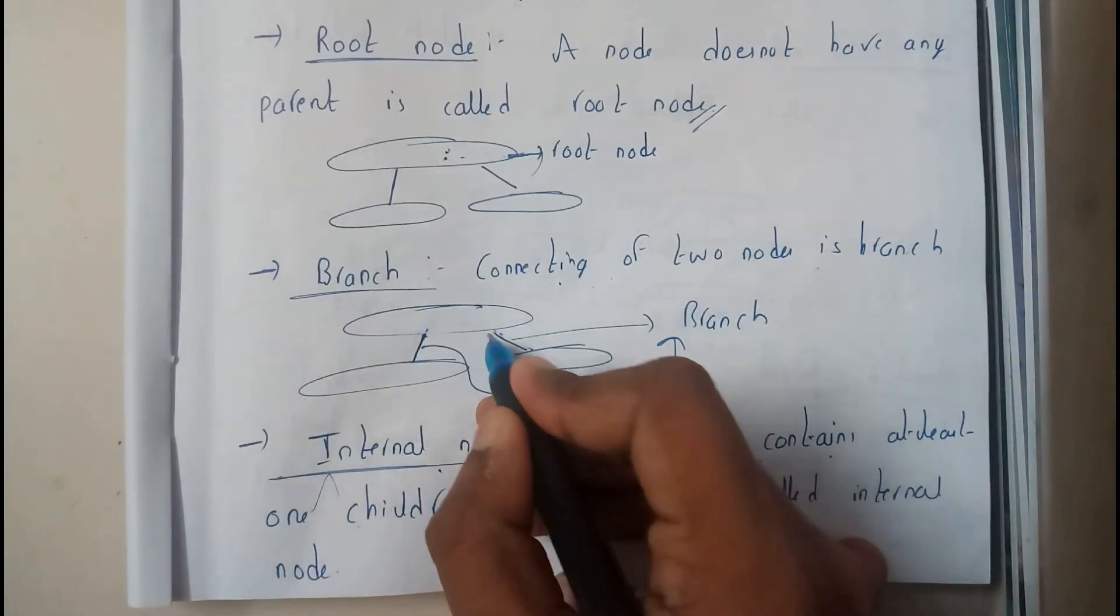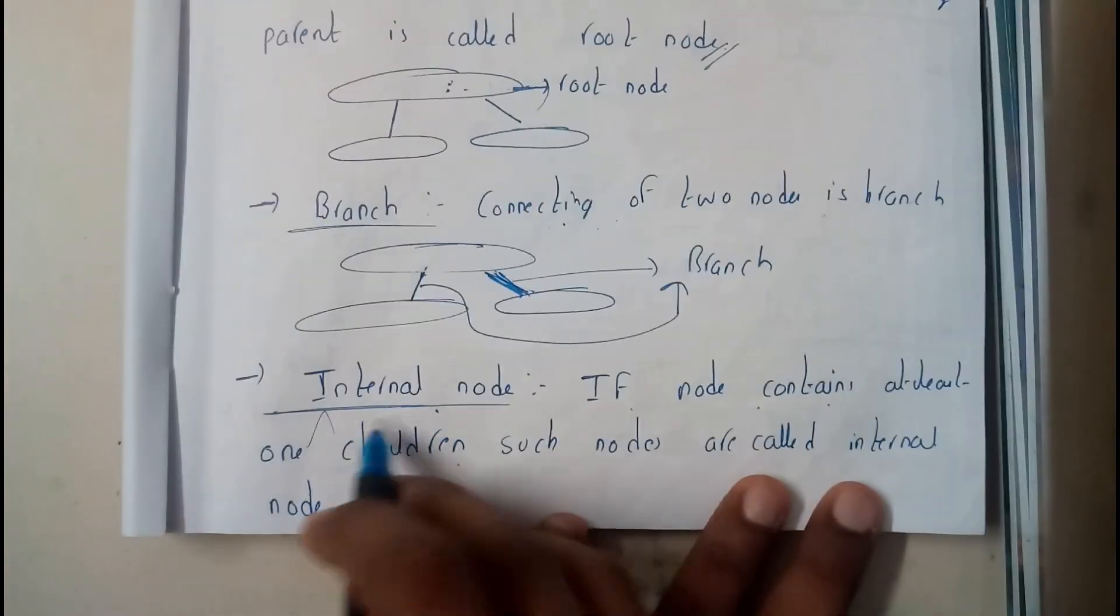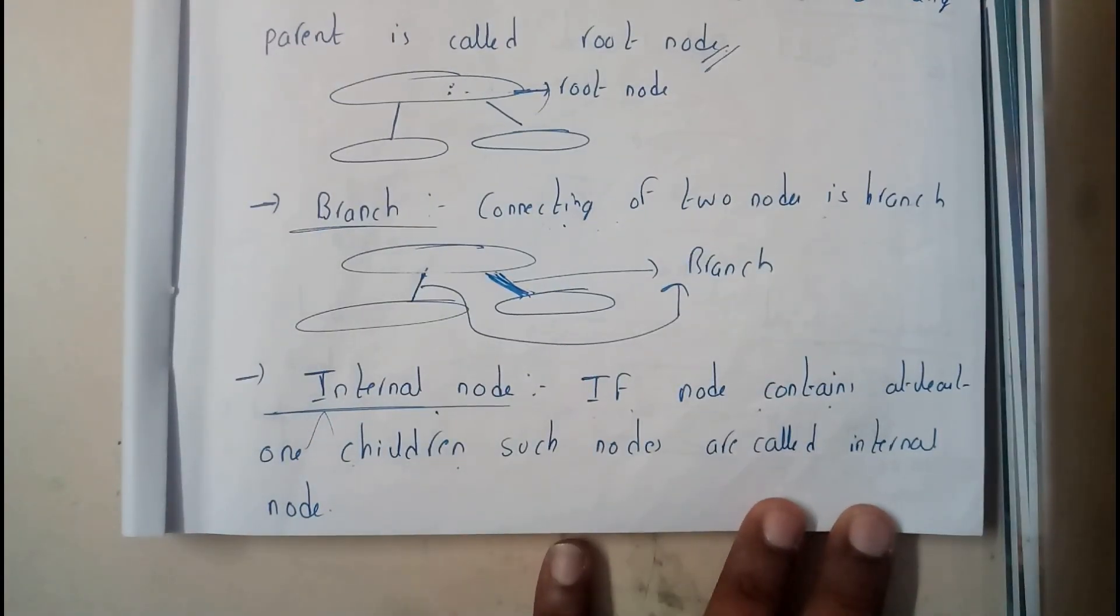Similarly, what is a branch? Connection or connecting of two nodes is the branch. This is what we call as a branch.